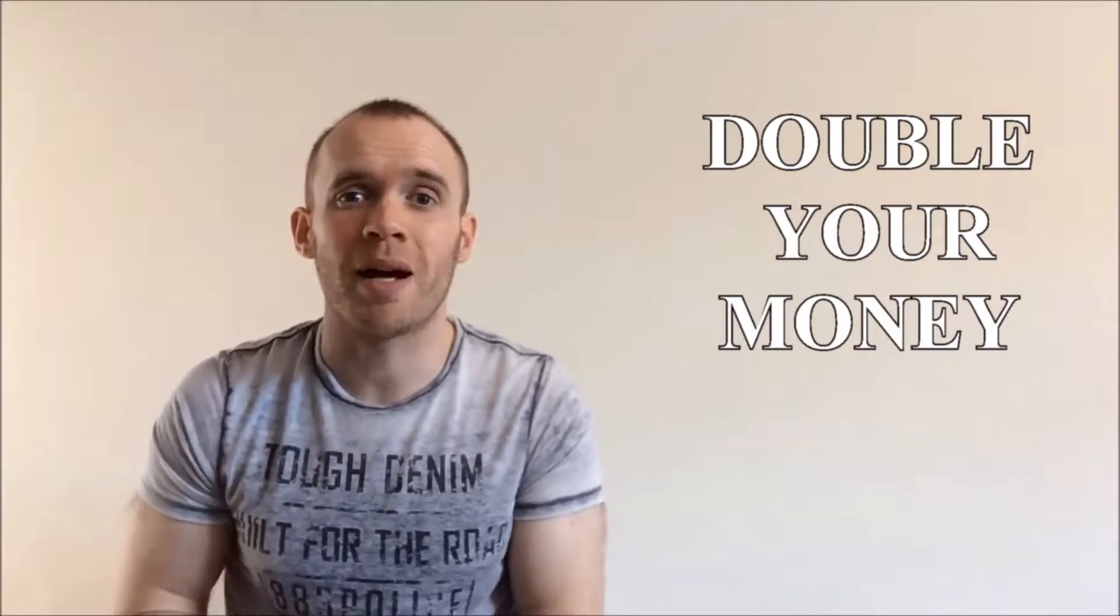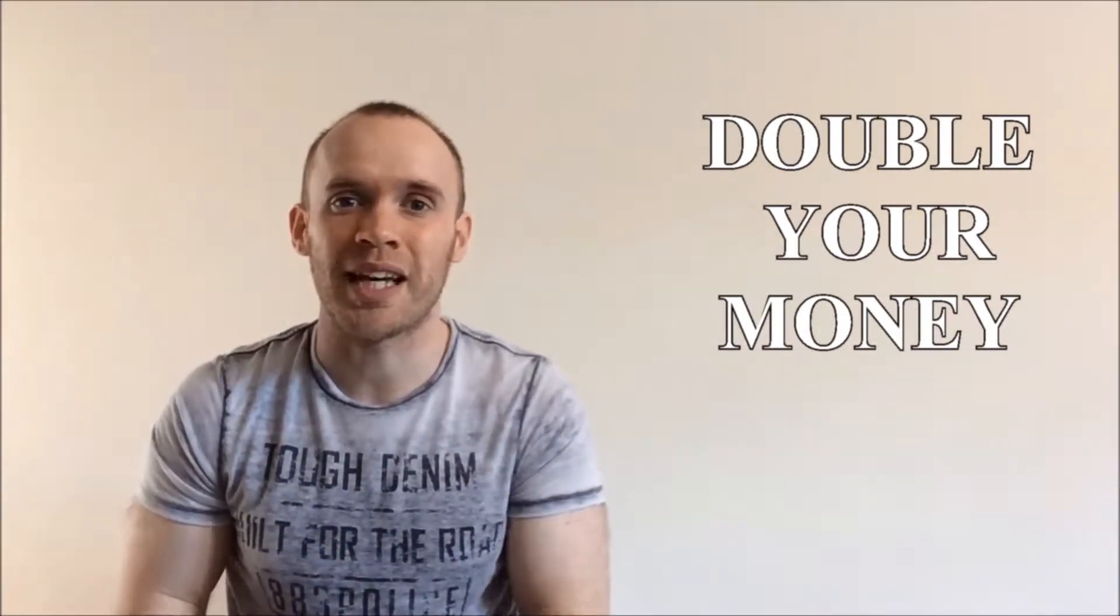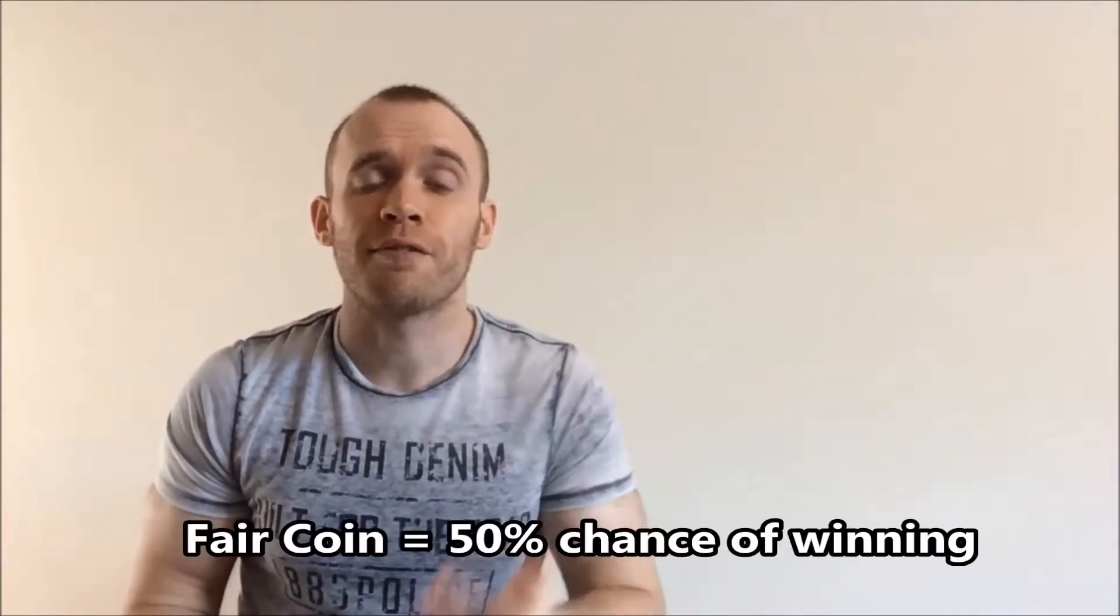Let's start with an event with two possible outcomes, the best example of which is just a coin toss. So you go to a fairground and there's a guy at a stall sitting there and he's offering to double your money if you correctly guess heads or tails. If you lose, he takes your money.